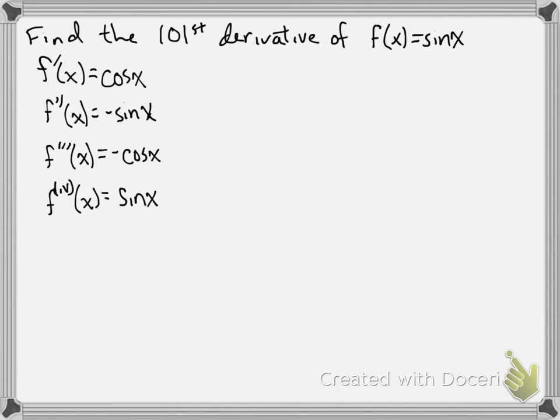And notice we're back to where we started. So it turns out that the fifth derivative is actually going to be cosine of x. The sixth derivative would be back to negative sine x. The seventh derivative is going to be back to negative cosine x. And the eighth derivative, that's as far as we really need to go, is going to be back to sine x.